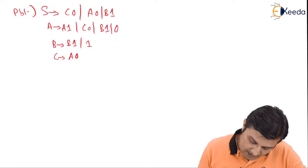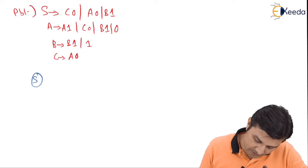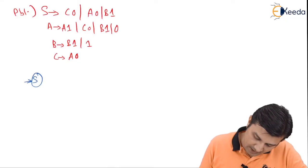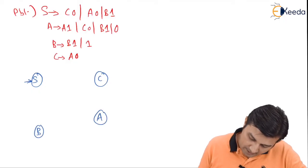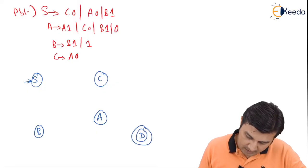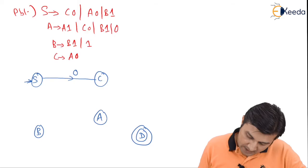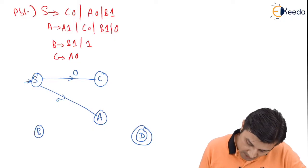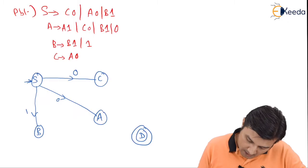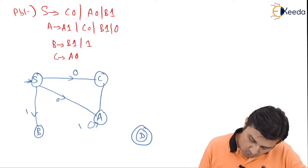Let us draw the transition diagram. I have states: S which is the start state, C, B, A, and for the final state I am taking a new state D. Now, S on 0 goes to C, S on 0 goes to A, S on 1 goes to B, and A on 1 goes to A, A on 0 goes to C.